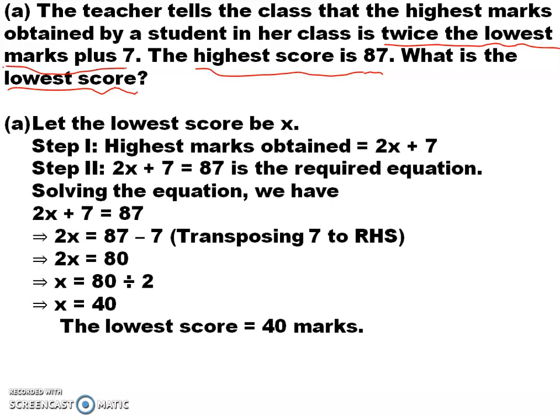Let the lowest score be x. Why did you take the lowest score as x? Because you are asked to find the lowest score. The quantity which you have to find will be taken as the variable. In this question, you have to find the lowest score, so you take the lowest score as the variable. Now, you will convert the given relation to an equation. The highest score is equal to twice the lowest mark plus 7.